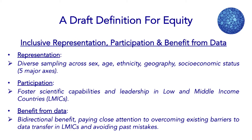But at the end of the day, we want to do better. We want to create an equitable HCA — equity not just with respect to representation and participation, but also with respect to benefit from the data. We want to create a representative human cell atlas that samples across sex, age, ethnicity, geography, and socioeconomic status. We also want to foster scientific capabilities and leadership in low and middle income countries to enable equitable participation and push technological innovation. And finally, we want to make sure that things generated from the HCA are useful for everybody equally.